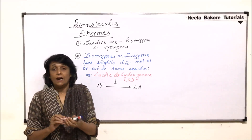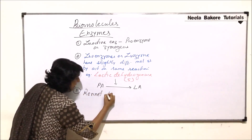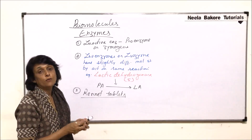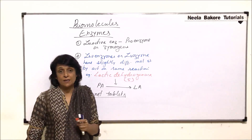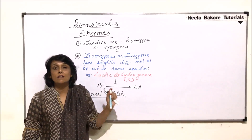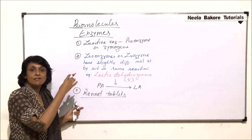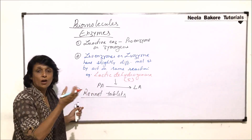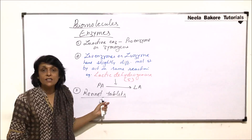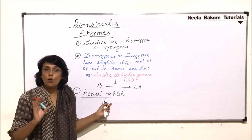The next important term is rennet tablets. Rennet tablets are obtained from calf stomach. Renin helps in the curdling of milk. Rennet tablets are used for cheese making or curdling of milk.